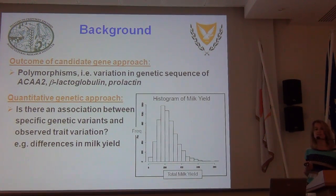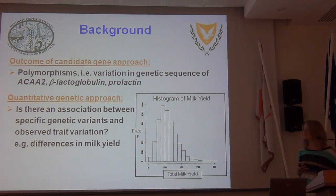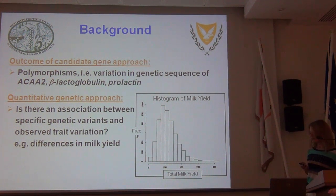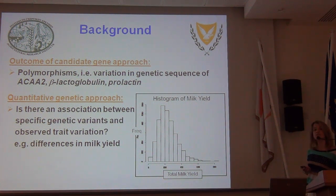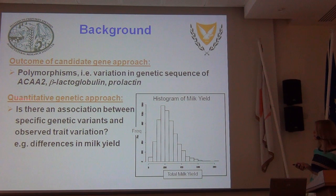The outcome of this search was described extensively by Dr. Ormore. Some polymorphisms were indeed found in different genes, and in particular some single nucleotide polymorphisms in some genes. The next necessary step was to take a quantitative genetic approach, and the main question was whether there is an association between the identified genetic variants — the different forms of these genes — with the observed trait variation.